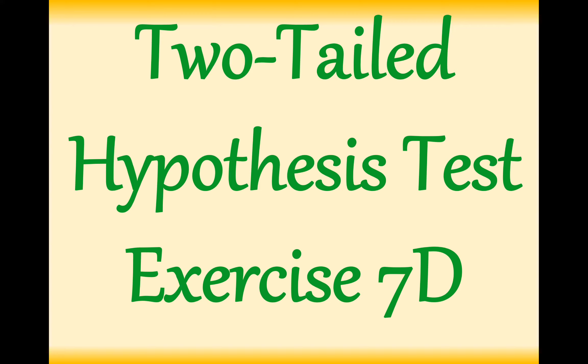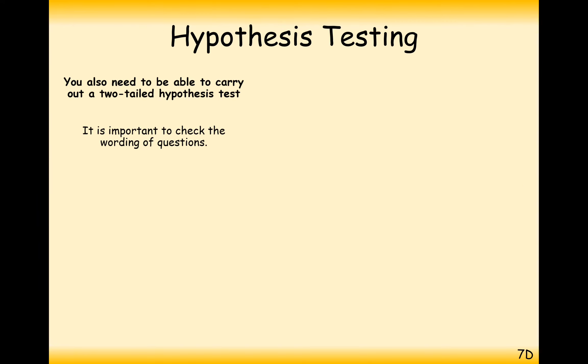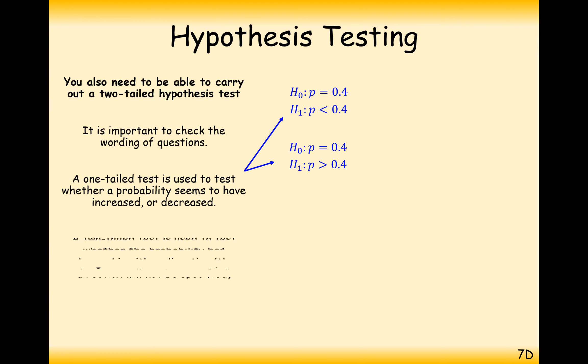So a two-tailed test is very similar to a one-tailed test, apart from the only difference is you're going to have to split up the significance level into two separate parts. One for the lower probability and one for a supposedly higher probability. For a one-tailed test, the probability is lower than 0.4 or the probability is higher than 0.4. In a two-tailed test, we're going to test for both of these at the same time, so whether the probability has changed or not.